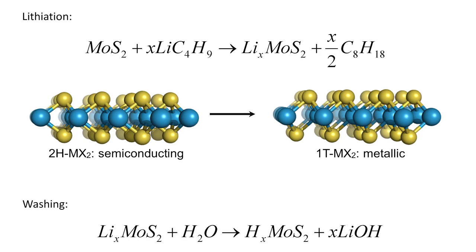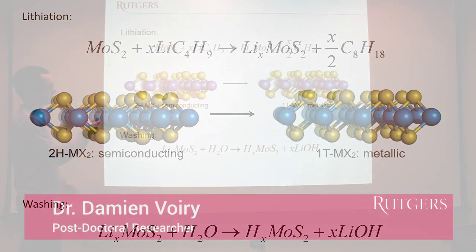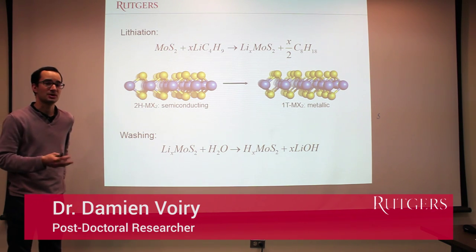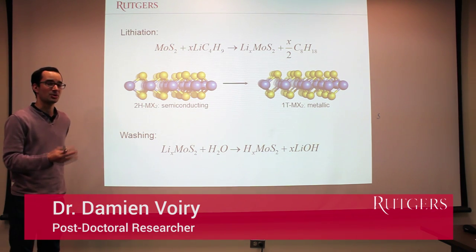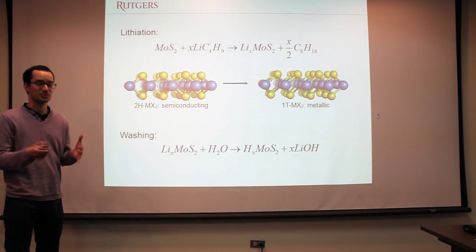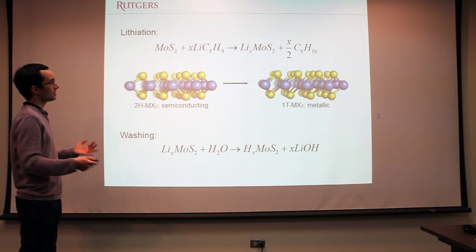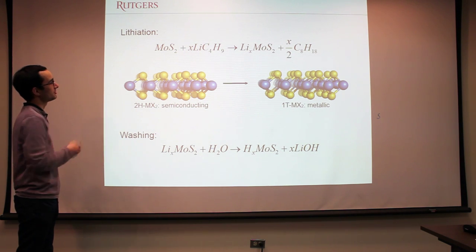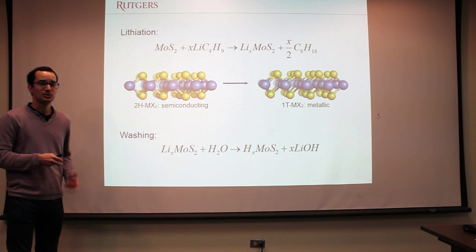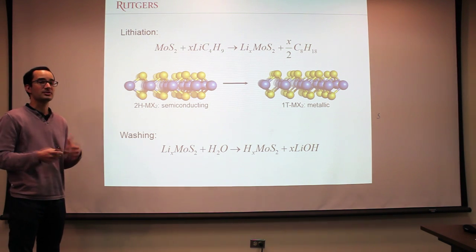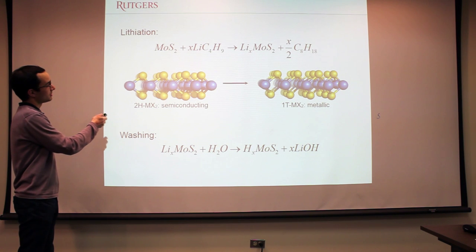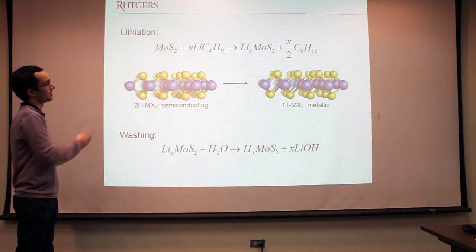It's a two-step process. The first step is the lithiation of our TMD. Here we show the example with molybdenum disulfide, MoS2. For this we use a reducing agent, which is butyllithium. We dissolve our MoS2 flakes deposited on SiO2 and soak them in a solution of butyllithium and hexane.